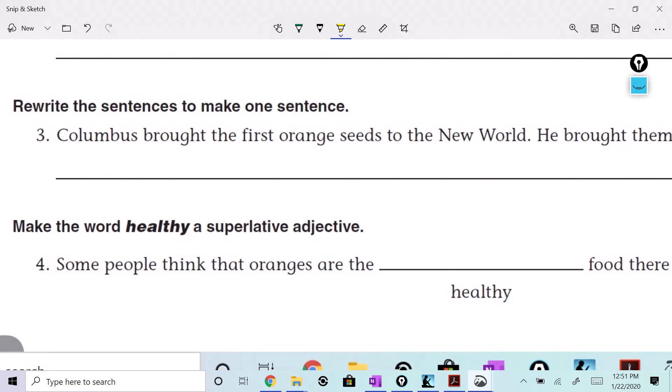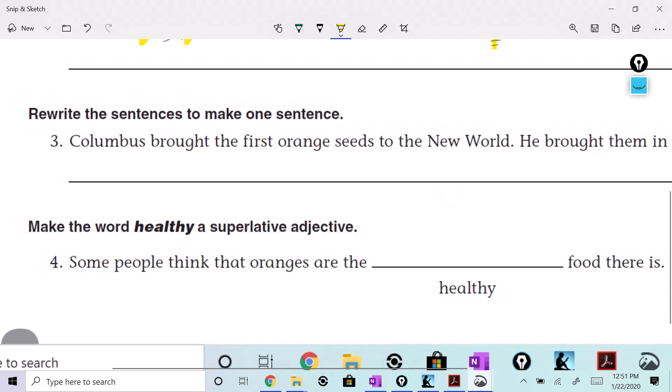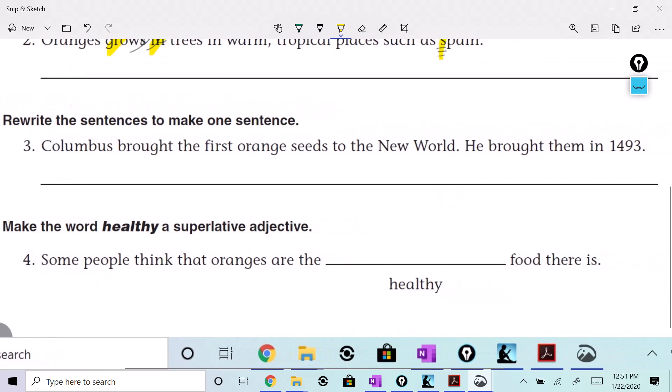Rewrite the sentence to make one sentence. All right. So, we've got two sentences here. You ready? It goes like this. Columbus brought the first orange seeds to the new world. He brought them in 1493. Check it out. Here's how I'm going to do it.